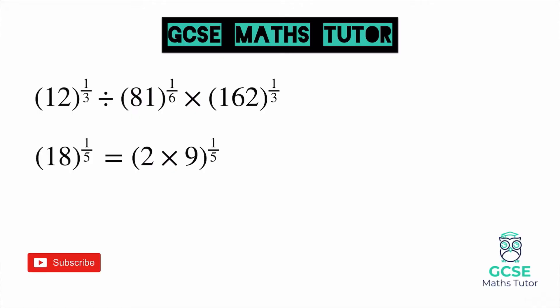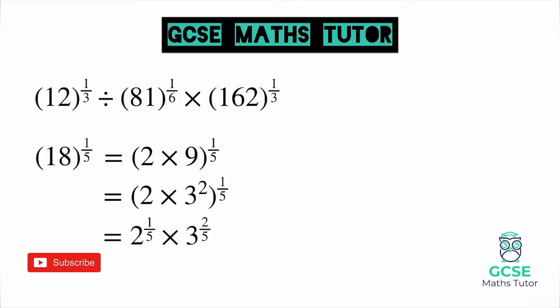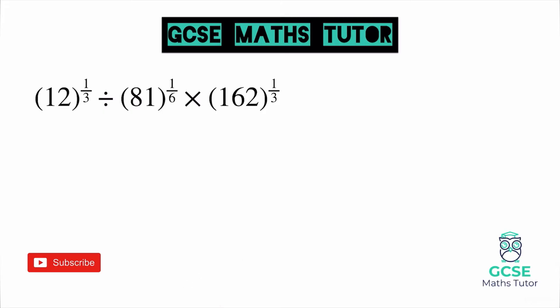We also know that 9 could be written as a power of 3, so we could write 9 as 3 squared. Now we also have the power of a fifth on the outside of the bracket, so we could apply our laws of indices and multiply out that power. That would leave us with 2 to the power of a fifth times 3 to the power of 2 fifths — multiplying the power of 1 on the 2 by one fifth, and the power of 2 on the 3 by one fifth. That gives us something we can potentially build on, since with other powers of 2 and 3 we might be able to add and subtract them in multiplication and division. So we are going to have to think about our laws of indices.